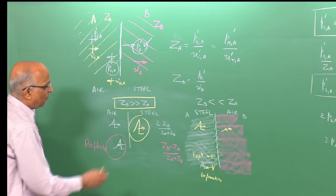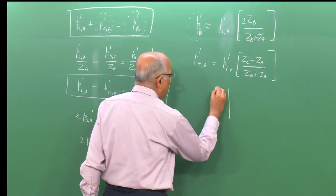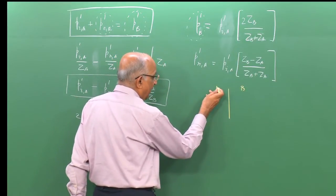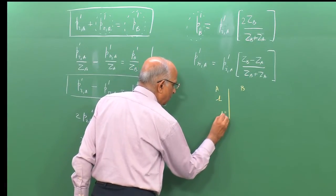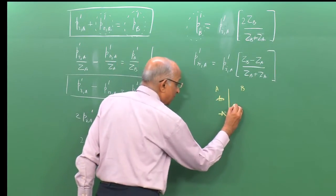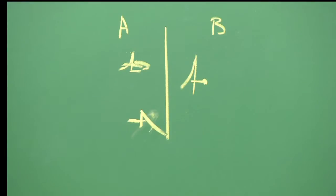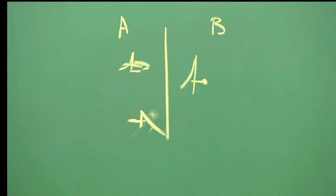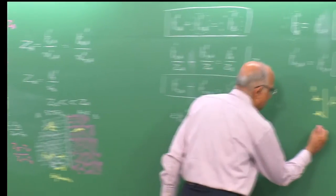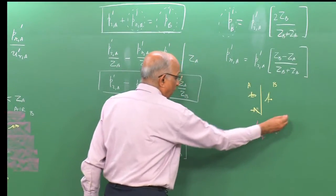Based on these expressions: when Z_a > Z_b, a compression is reflected as a compression. When the impedance of the second medium B is much less than the first, a compression gets reflected as an expansion — a rarefaction — while a compression is still transmitted forward into medium B.